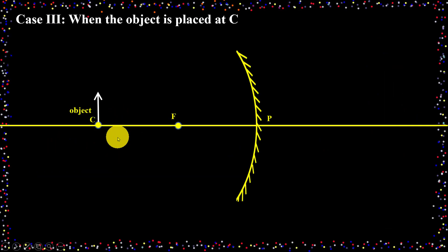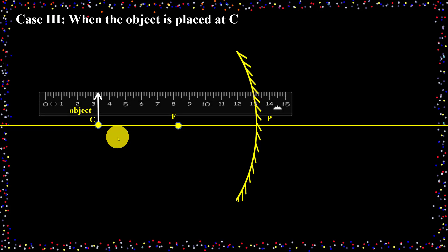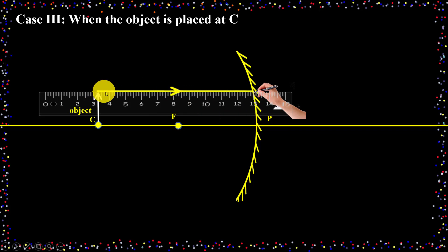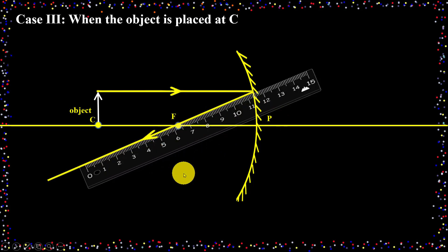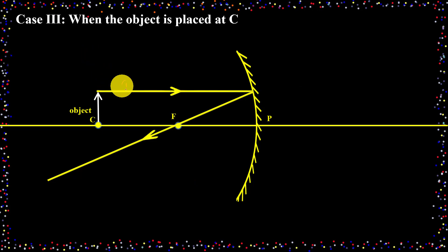I need to draw a ray diagram. For that we need a minimum of two light rays. The first ray is parallel to the principal axis. As per Rule 1, if any light ray is parallel to the principal axis, the reflected ray passes through the focus. So to draw the reflected ray, I am joining the focus and the point of incidence. This is the first incident ray and the first reflected ray.